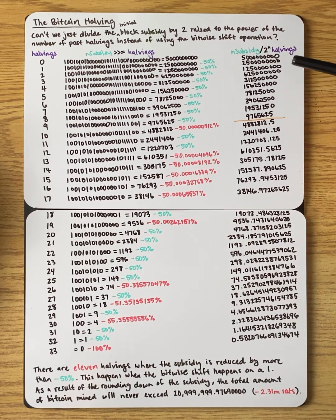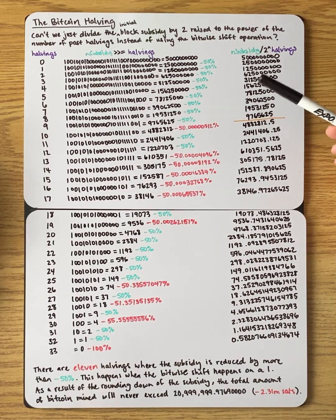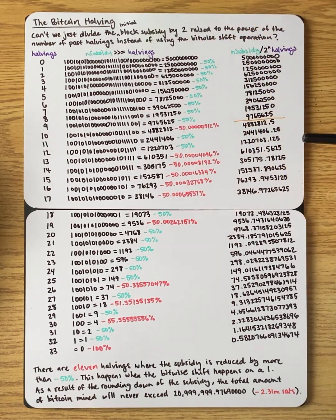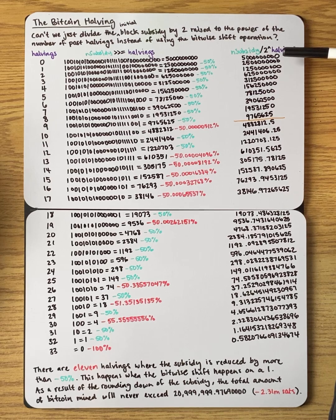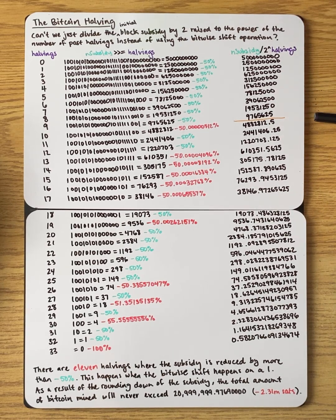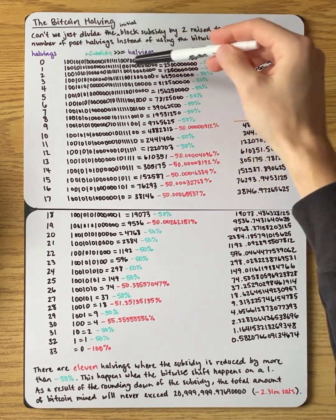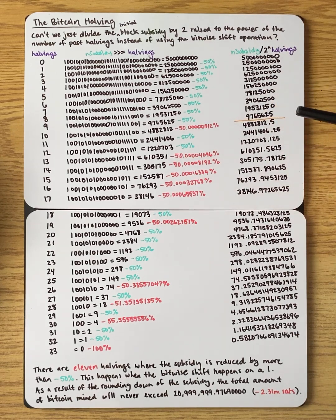Ultimately both methods yield very similar results, but there are some key differences. From a computer science perspective, doing a bitwise shift operation is cleaner — it's literally just one parameter for the bitwise shift and then another parameter. Whereas doing the division calculation requires a few more things: a division operation, a power operation, and also a rounding-down operation, because the result won't necessarily always give you an integer unless you specifically ask for one. So doing it the bitwise way is actually just cleaner, easier, and more efficient — that's probably why it was chosen.